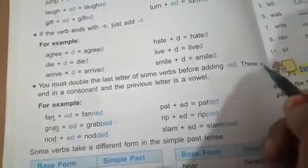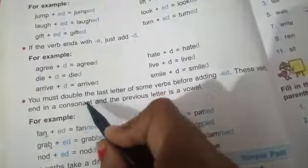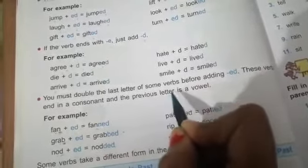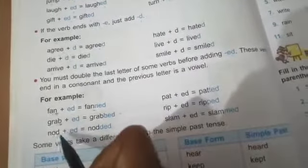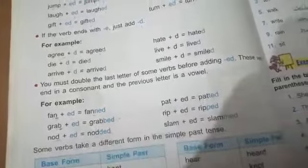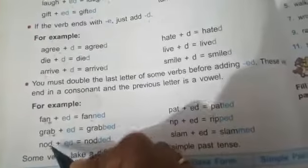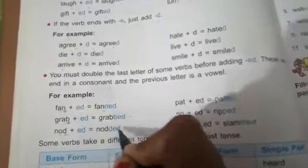See here that verbs end in a consonant, and the previous letter is a vowel. Like this one. So we will double the last consonant, and after that, we will add ed.